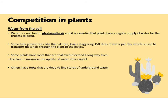The next thing plants will compete for is water, which they get from the soil. Water is a reactant in photosynthesis and it is essential that plants have a regular supply. Some fully grown trees like oak trees lose around 150 litres of water per day, used to transport materials through the plant to the leaves. Some plants have shallow roots that extend a long way from the tree to maximise uptake of water after rainfall, and other plants have deep roots to find water stores underground.